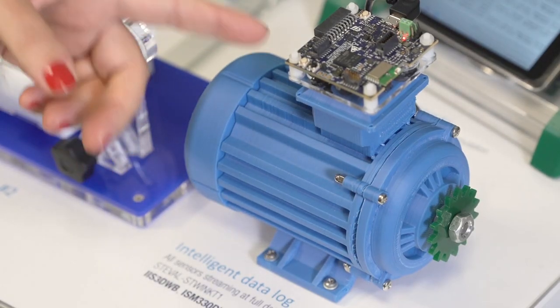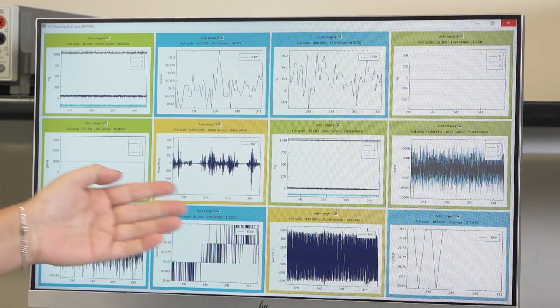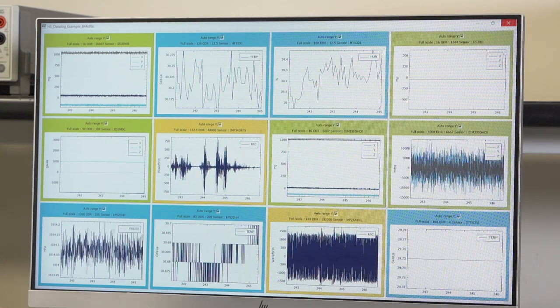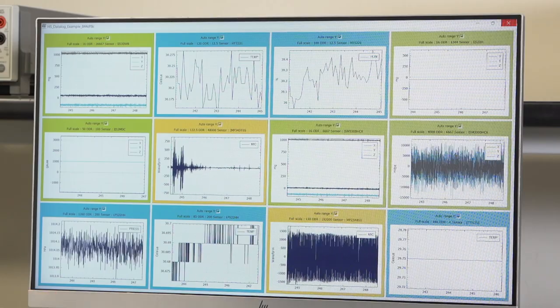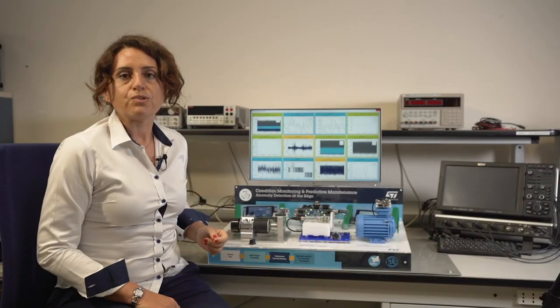STWIN comes with a complete ecosystem, including software for high-speed data logger and interoperability with Unicode GUI. Let's turn on the device, and here we see the GUI showing all the data streaming. This tool is great for helping engineers in gathering insights and test their own algorithms. The GUI is available also as open source and contains some famous examples and high-speed sensor data logging to SD card or via USB.